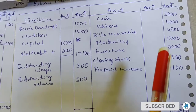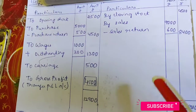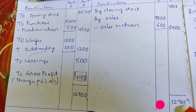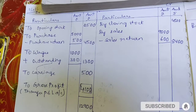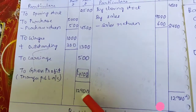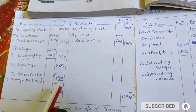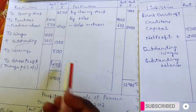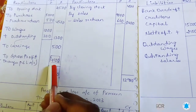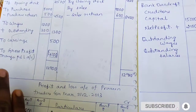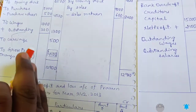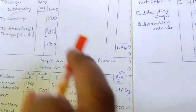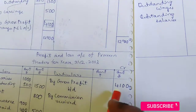Now let's balance all the accounts. Credit side total of trading account: 12,900. Debit side total: 8,800. So 12,900 minus 8,800 equals 4,100. The balance goes to the debit side — this is gross profit. Transfer this same amount to the P&L account on the opposite side: gross profit 4,100.